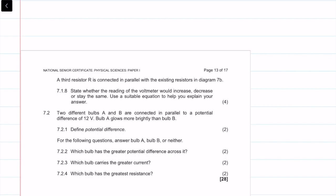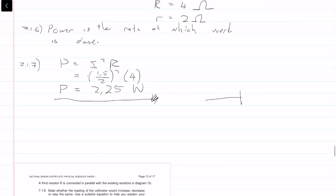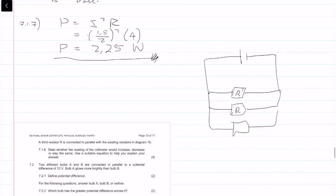The question continues: a third resistor R is connected in parallel with the existing circuit. State whether the reading of the voltmeter would increase, decrease, or stay the same. Let's draw out the circuit very quickly. We have one resistor R, this is our current circuit, and now we're adding another resistor in parallel.